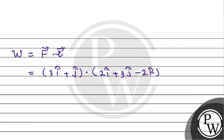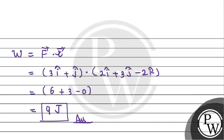Now we are performing the dot product here. So 3 times 2 gives us 6 for the i component. Then j times j multiplication gives us 1 into 3, which is 3. There is no k term present in the force vector, so the k term contributes zero. So simply 6 plus 3 is going to be 9. Therefore, to shift the particle from initial position to final position, the work done is 9 Joules.